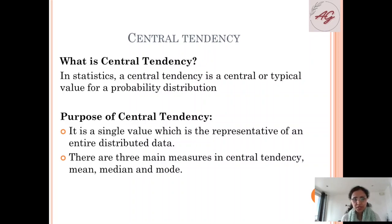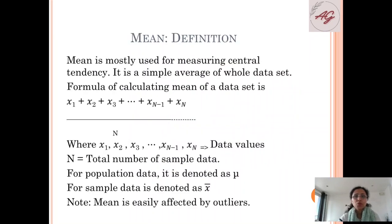There are three main measures in central tendency: mean, median and mode.